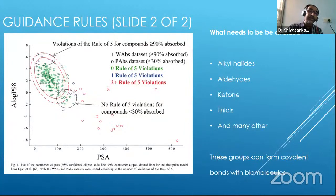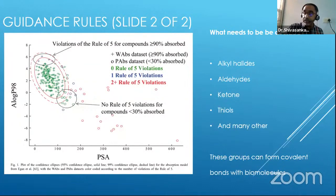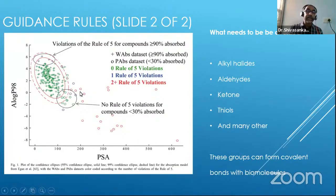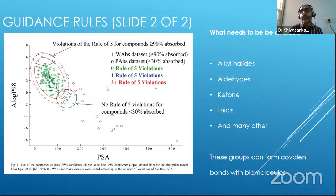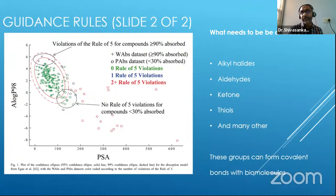If you populate all the active pharmaceutical ingredients into a graph, you would see that most of them fall in the category where the rule is satisfied. There are exceptions of one rule or two rules or multiple rules, but most cases of drug discovery are based on Lipinski's Rule.